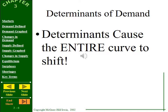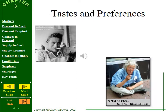The determinants of demand, unlike price of the product, cause the entire demand curve to shift. An increase in demand is demonstrated as a shift to the right, causing price and quantity to rise. A decrease in demand is a shift down and to the left. One determinant is taste and preferences — smoking was cool in the 60s, increasing demand for cigarettes, but anti-smoking campaigns later caused demand to fall.